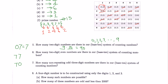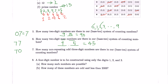How many two-digit even numbers are there? Even numbers have a last digit of 0, 2, 4, 6, or 8 — so 5 choices for the last digit. The first digit can be 1–9 (not 0), so 9 choices. Therefore, 9 times 5 equals 45 two-digit even numbers — about half of 90.